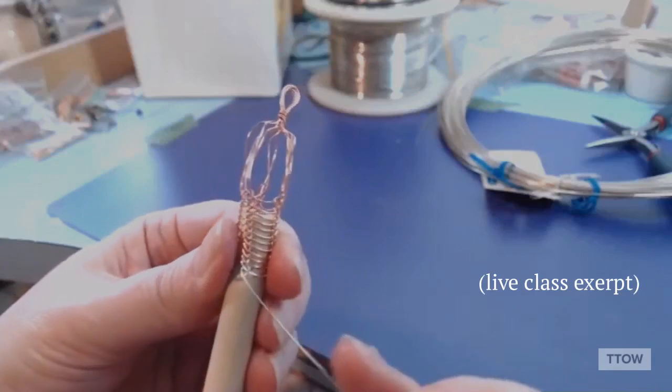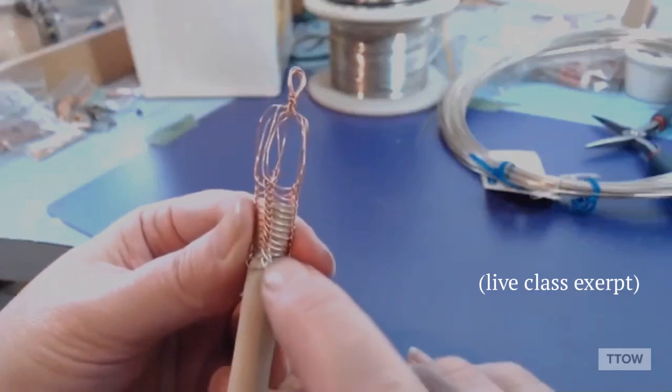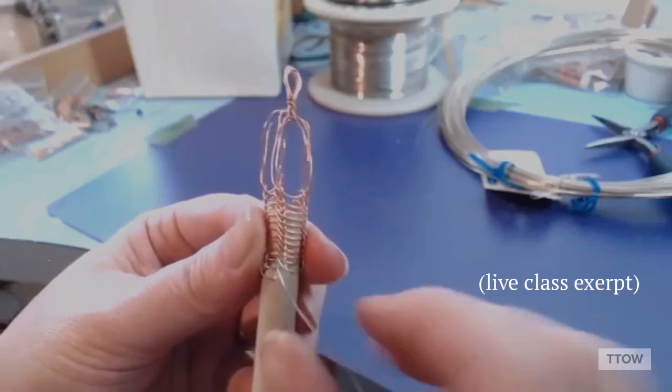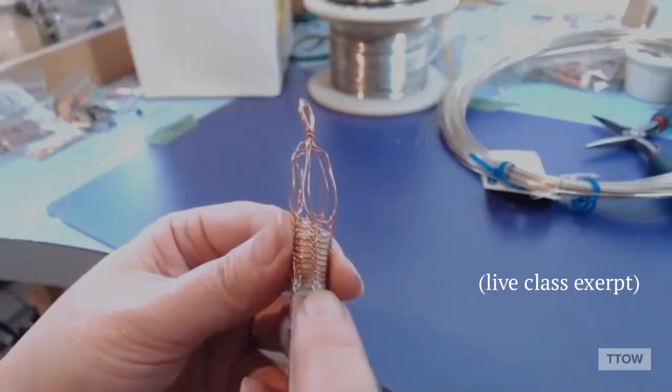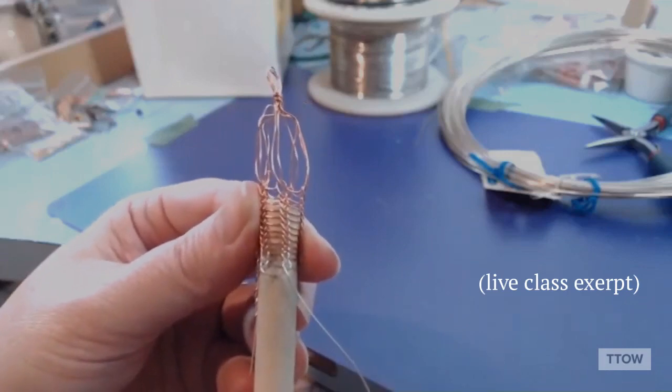But I'm still gonna bring the wire across the front because I do want the loops to all look the same size. But there is a little bit more space now between this loop and this loop than there was on the previous row.